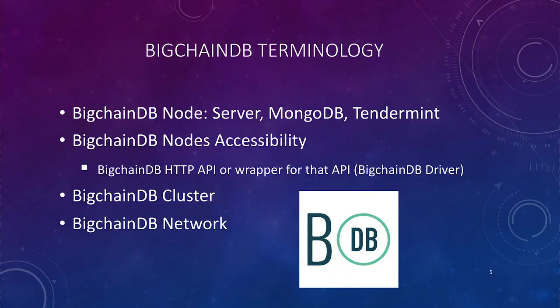A little more on BigchainDB terminology and how it all works together. A BigchainDB node is a logical machine running the necessary software, such as the BigchainDB server software and MongoDB as the back-end database, which provides the blockchain functionality. A BigchainDB node is accessed and created using a BigchainDB HTTP API or a wrapper for that API, such as a BigchainDB driver, which comes in multiple languages such as Python and JavaScript.